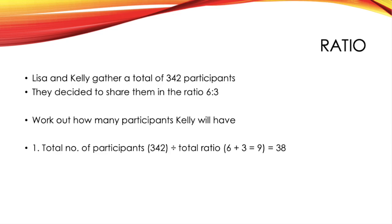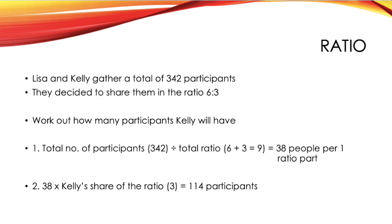and divide this by the total ratio. And to do this, you just add up each ratio part. So, here we just have the two, which are 6 and 3, and adding them together gives you 9. When you do this, you get a total of 38. So, 38 represents one ratio part. Next, what you do is you times that one ratio part, so 38, by Kelly's share of the ratio, which is 3. And in doing so, you'll find that Kelly's share is 114 participants.